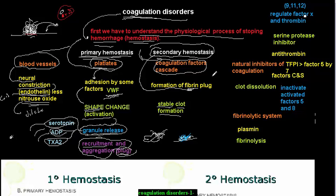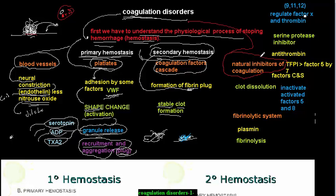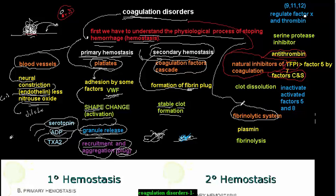Does the process end here? No, it doesn't. The clot that is formed must be destructed — must be lysed — afterwards, so that we have no problem with it. There are mechanisms that prevent or lyse this clot. We have natural inhibitors of coagulation: factors in blood that prevent or inhibit coagulation, like antithrombin, protein C and S, and what we call TFPI. We also have the fibrinolytic system, which works in fibrinolysis — the lysis of the fibrin that is formed.